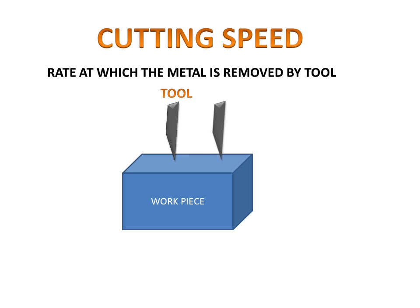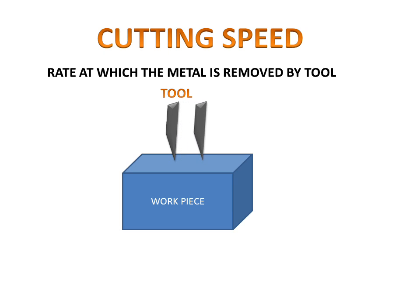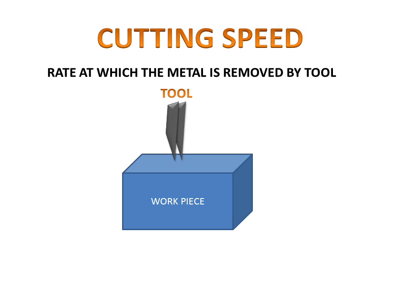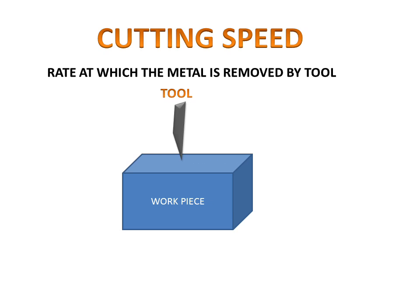When the tool moves slowly and removes metal, this is the rate of the tool for removing the metal. And if we increase the cutting speed of the tool, the rate will be different from the first one. If we increase the speed of the tool for metal removal, this is our cutting speed.